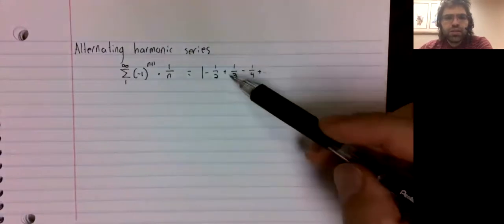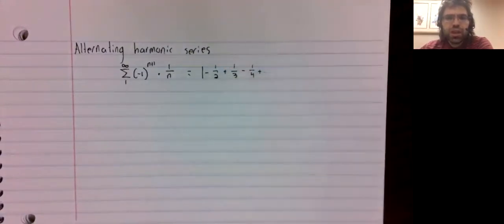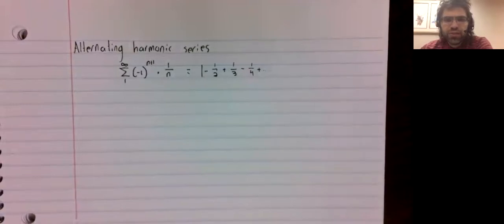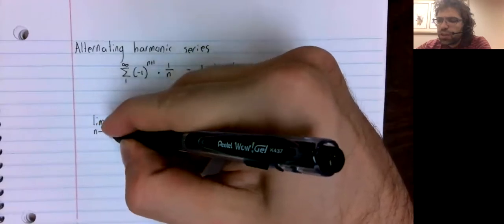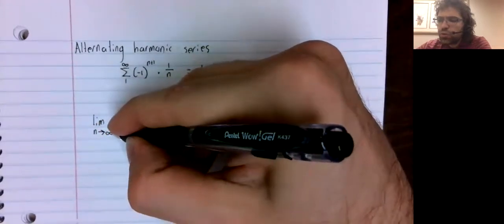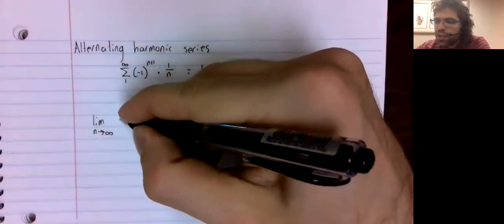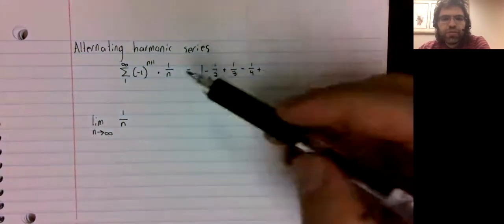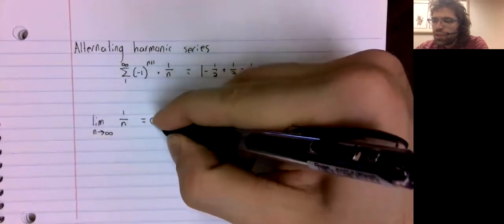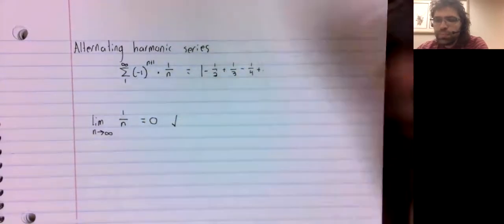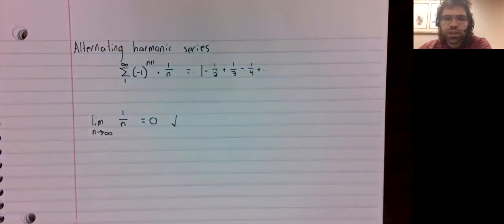And this alternating series converges. To demonstrate that using the alternating series test, we only need to show two things. We need the limit as n goes to infinity of these terms to equal 0, which we certainly have.